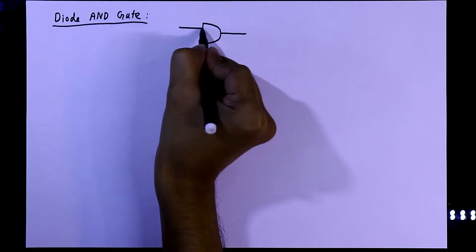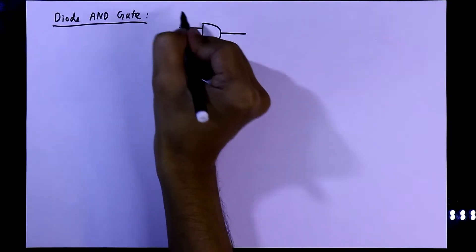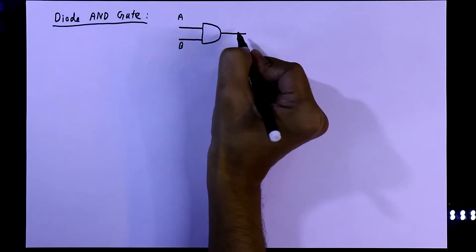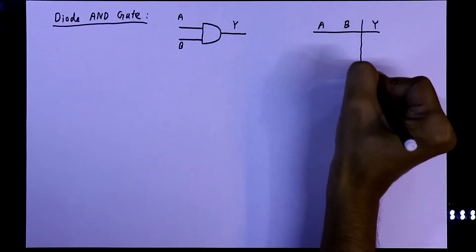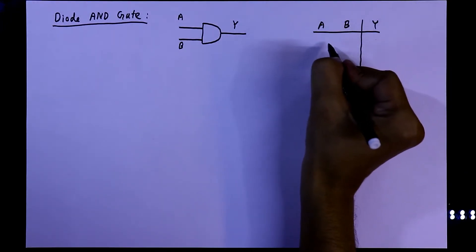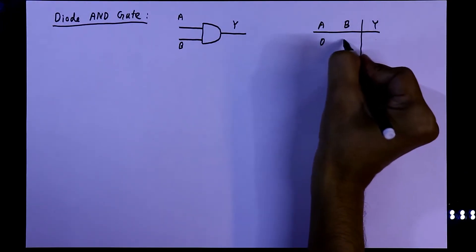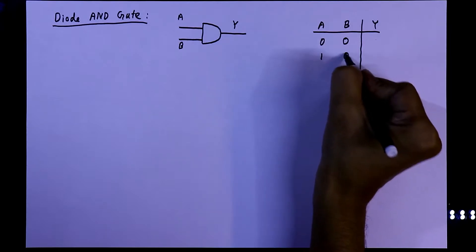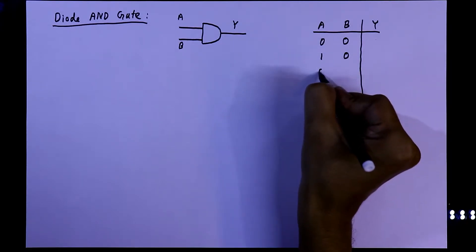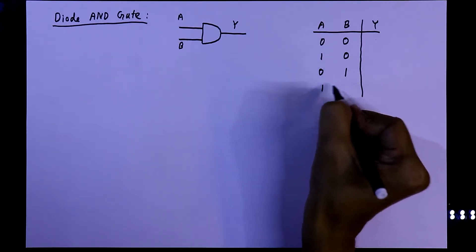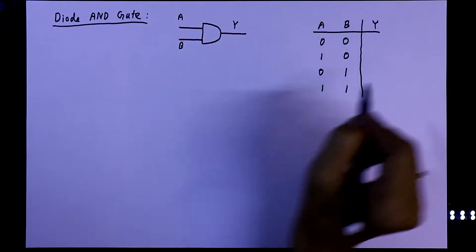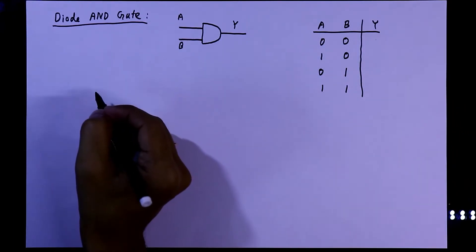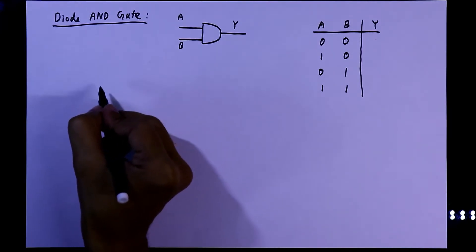The symbol of an AND gate has inputs A and B and output Y. The truth table has four conditions: when both are 0, A=1 B=0, A=0 B=1, and both are 1. We are going to design a two-input AND gate.